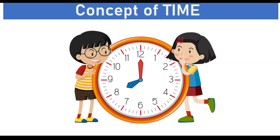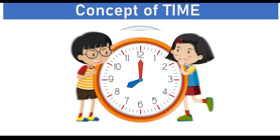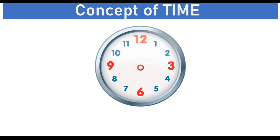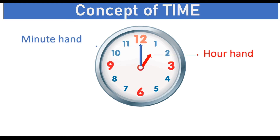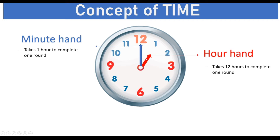So let's start with the concept of time. First, let's take a look at a clock. A clock has a longer hand and a shorter hand. The long hand is called the minute hand and the shorter hand is called the hour hand. The minute hand takes 1 hour to complete 1 full round of the clock, whereas the hour hand takes 12 hours to complete 1 round. And as per the conversions, 1 hour is 60 minutes and 1 minute is 60 seconds.